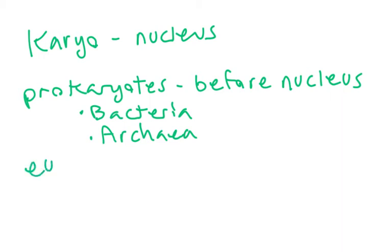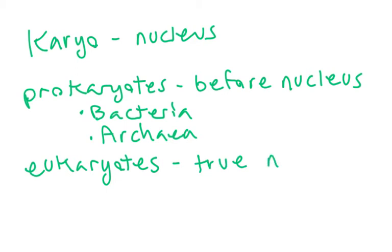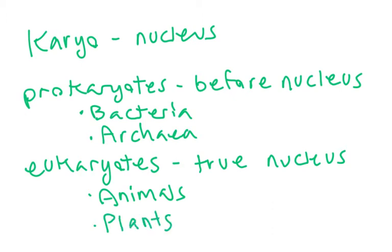Eukaryotes are the ones that have a nucleus, and by extension they also have other membrane-bound organelles. An organelle is just a compartmentalized membrane-bound thing in the cell that performs a specific function connected to the structure of that compartment. Within eukaryotes, we have animals and plants. There are also other organisms like fungi, but we are mainly going to be looking at the animal cell and the plant cell.